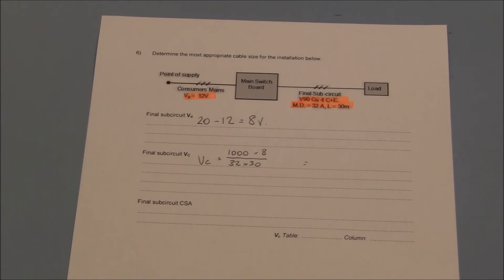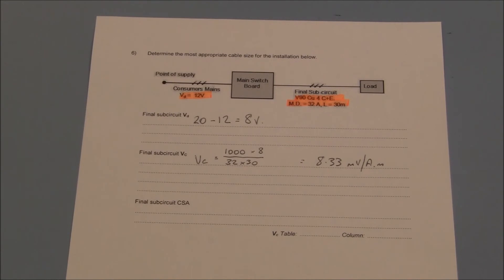we can calculate the value of VC to be 8.33 millivolts per amp-metre. Because this is a three-phase arrangement, we do not need to convert any of the values from the tables.